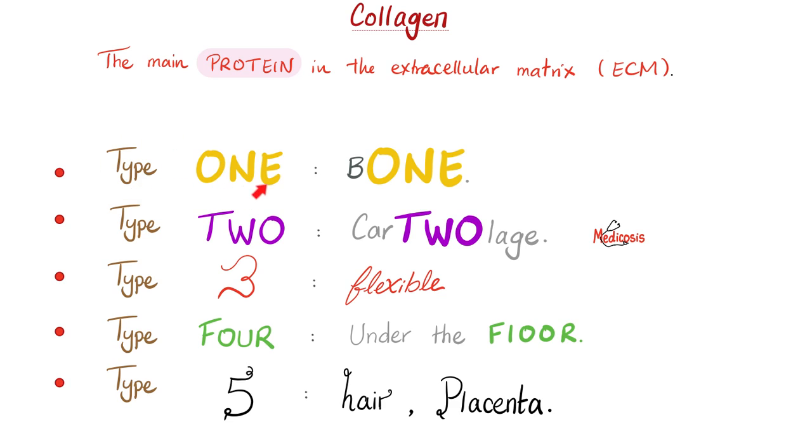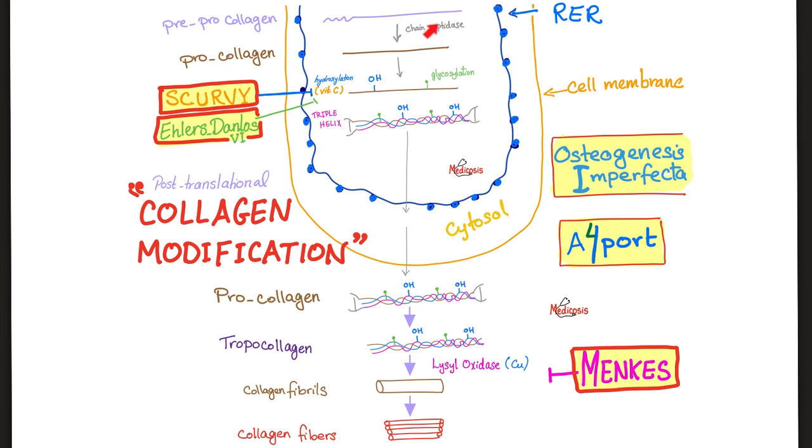As you recall, type 1 collagen is to be found in bones, but type 2 is to be found in cartilage. Here is collagen. It's a complex protein structure, therefore rough endoplasmic reticulum. It starts as pre-procollagen, then becomes procollagen. As it matures, it becomes collagen.